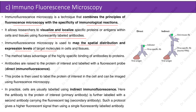The method takes advantage of the highly specific binding of antibodies to proteins. Antibodies are raised to the protein of interest and labeled with a fluorescent probe. In direct immunofluorescence, this probe is used to label the protein of interest in the cell, which can then be imaged using fluorescence microscopy.